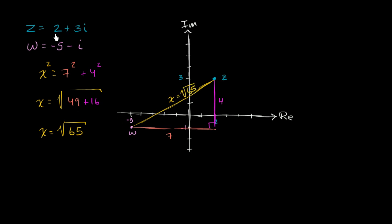The distance in the complex plane between these two complex numbers is the square root of 65, which is a little bit over 8. Now, what about the complex number that is exactly halfway between these two? To figure that out, we need to find what number has a real part halfway between the two real parts, and an imaginary part halfway between the two imaginary parts.